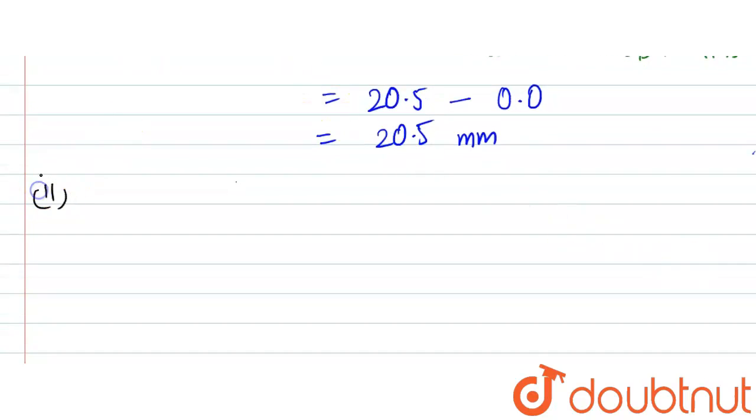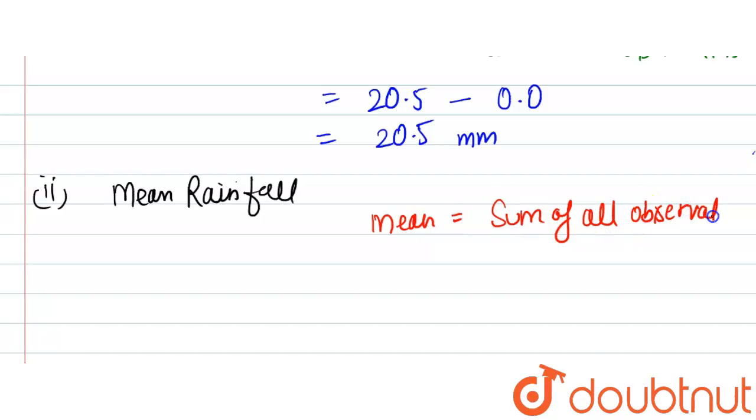Now moving to the next part, that is mean rainfall. For finding mean rainfall we know the formula of mean, that is sum of all observations divided by number of observations. This is the formula for mean.